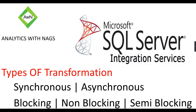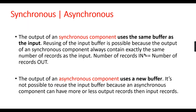In this video we're going to see what are the different types of transformations in SQL Server Integration Services. Broadly, they are classified into synchronous and asynchronous, and also as blocking, non-blocking, and semi-blocking. These are different types of classification we can do for a single transformation — specifically a data flow transformation, not a control flow.